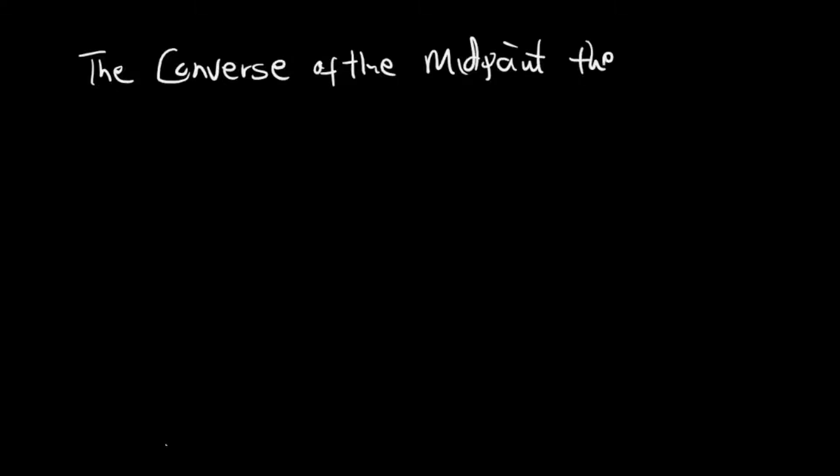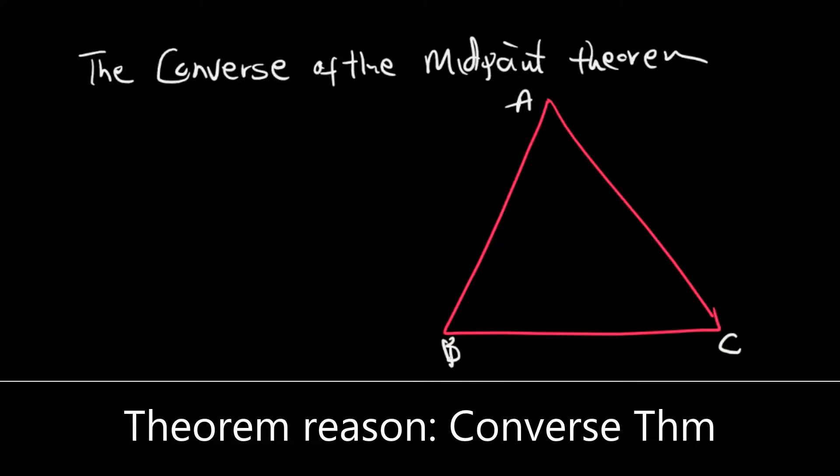Say we are given a diagram like this. This is A, this is B, this is C, and then there's a line that joins here which is D and E.